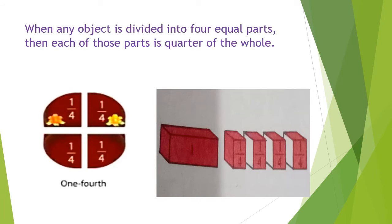When any object is divided into four equal parts, then each of those parts is a quarter of the whole. And one quarter is shown by a fraction as one upon four. You can see in this picture the whole part is divided into four equal parts, so it is known as a quarter.